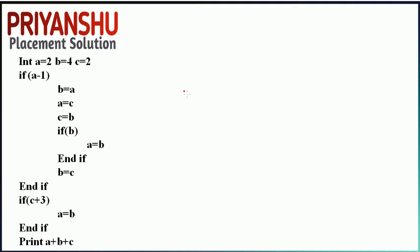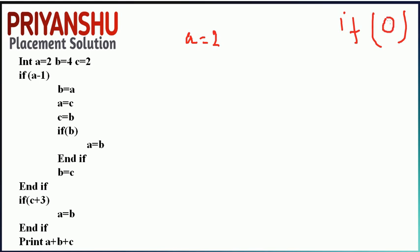In this first question there are three variables: the value of a is 2, b is 4, and c is 2. If we evaluate a minus 1, the value of a is 2, so 2 minus 1 gives 1. In an if condition, zero means false and all other values are treated as true.